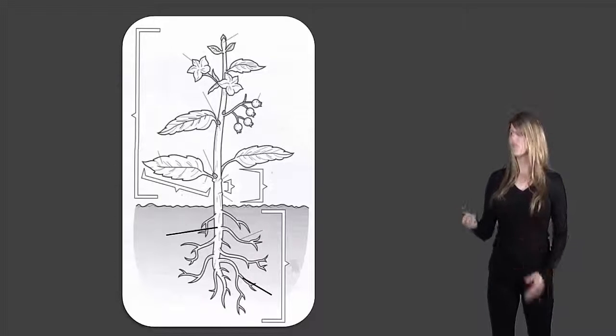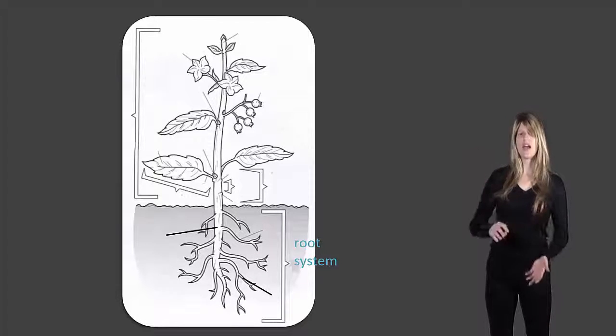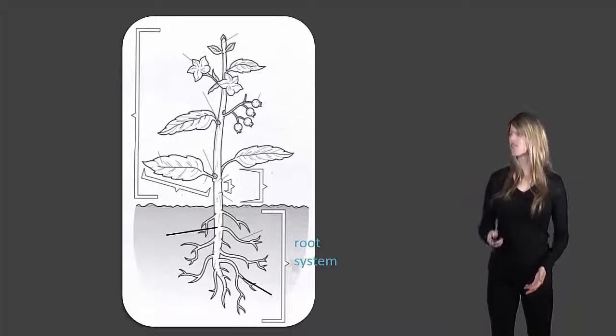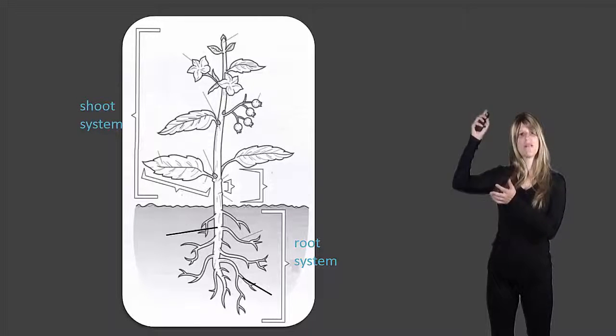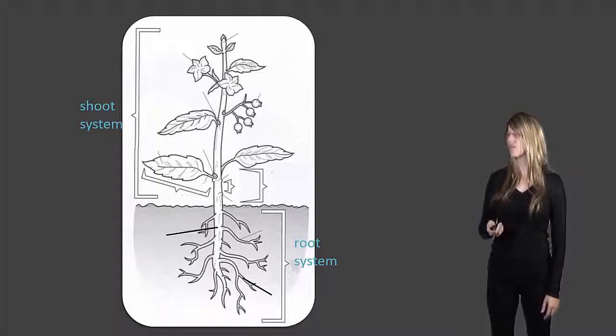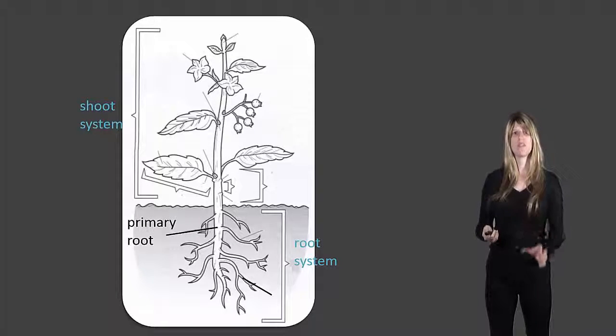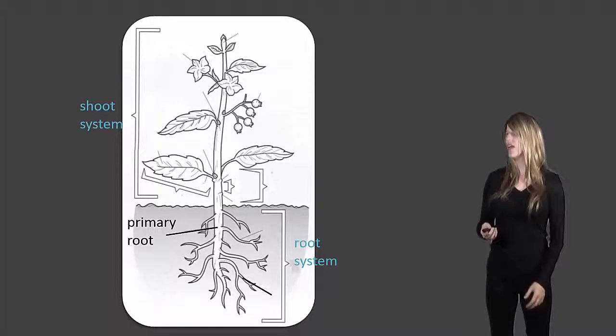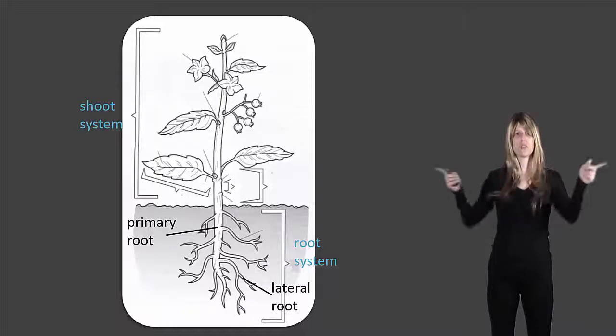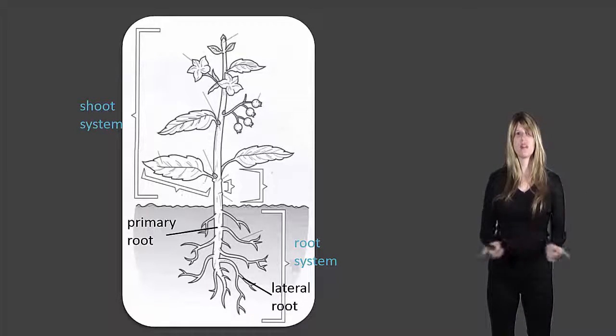So first of all, if this is a plant here, the part that's underneath the ground is the root system and the part above the ground is the shoot system. Now the root system has a couple parts. There's the primary root which comes down from the main stem and then there's the lateral roots which branch out from the main the primary root.